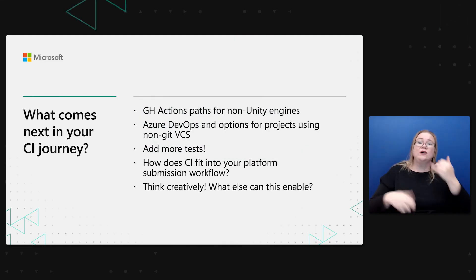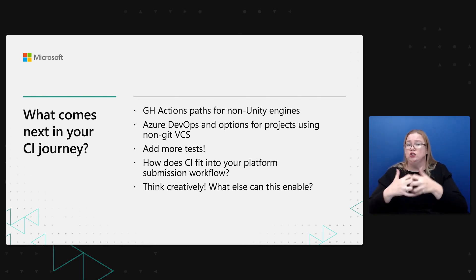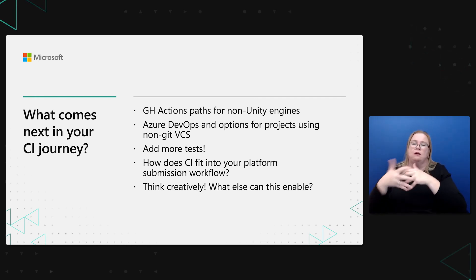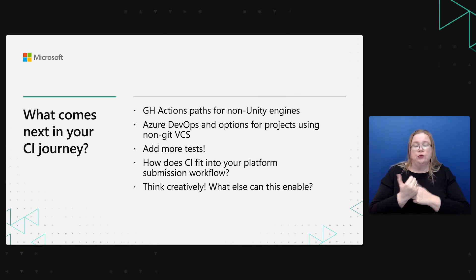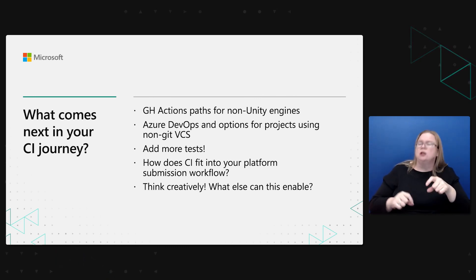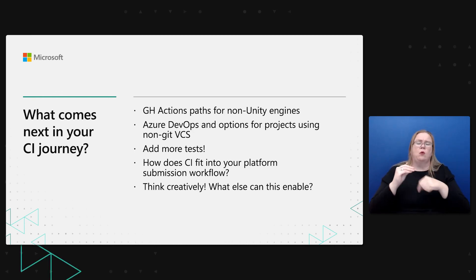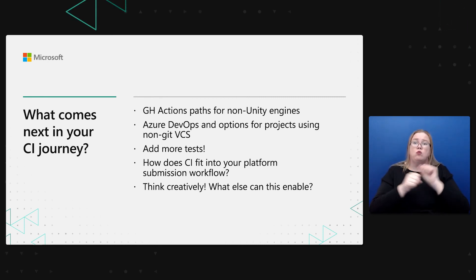This is all great if you're a Unity developer building for GitHub Actions — but what if that's not you? GitHub Actions has great support for non-Unity engines. If you're using Unreal, there are also community projects to add support for that. If you're using any alternative engine, as long as you can build it from a command line, you can integrate it into GitHub Actions pretty easily. If you're not using Git, there are also options — Azure DevOps, for example, has great Perforce support. And once you have the basic build setup working, what comes after that? Adding more tests can be really effective, and you can think through how to fully take advantage of your platform submission workflow and what you can optimize and automate.